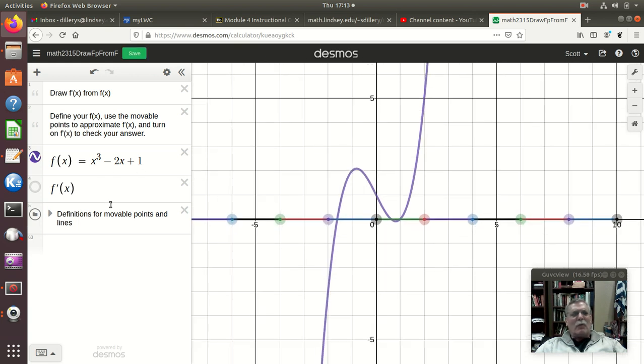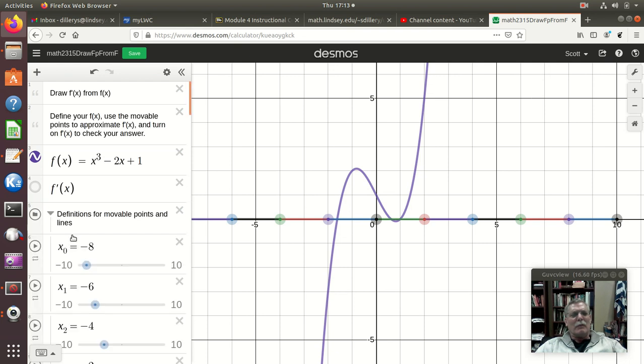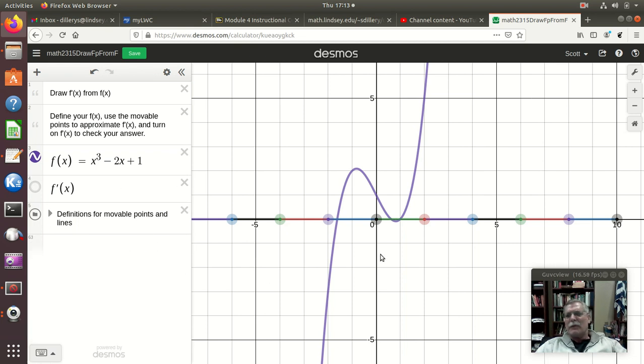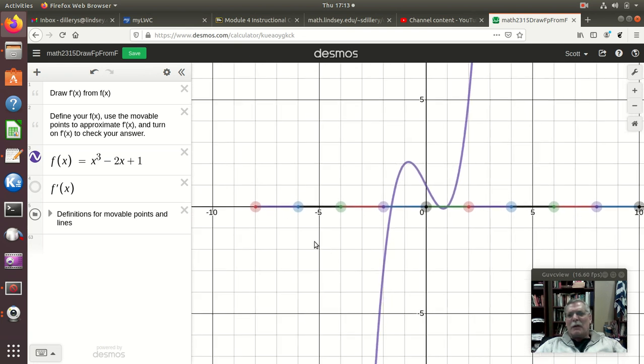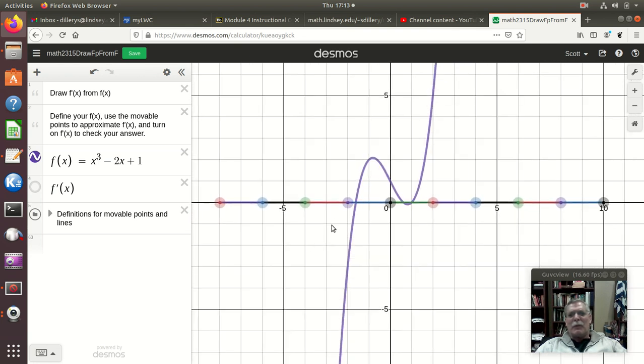Now, what this has, and there's no need for you to go looking, but here are definitions to make all these points in here. It's in a folder, so you don't have to look at it all the time. And these are just movable points, and what I can do is take some of them to help me make things.